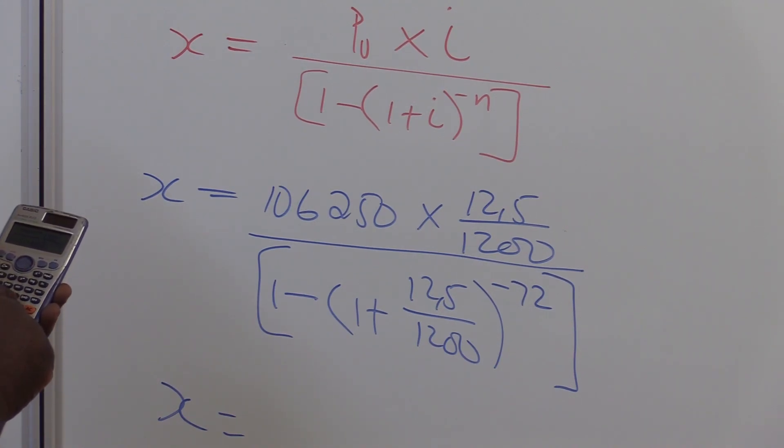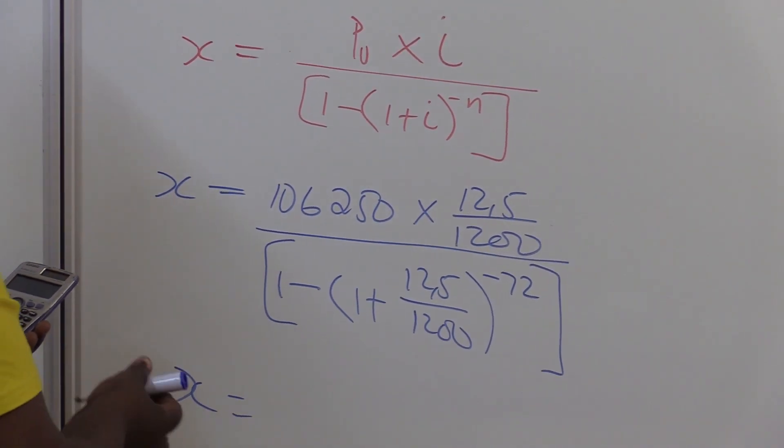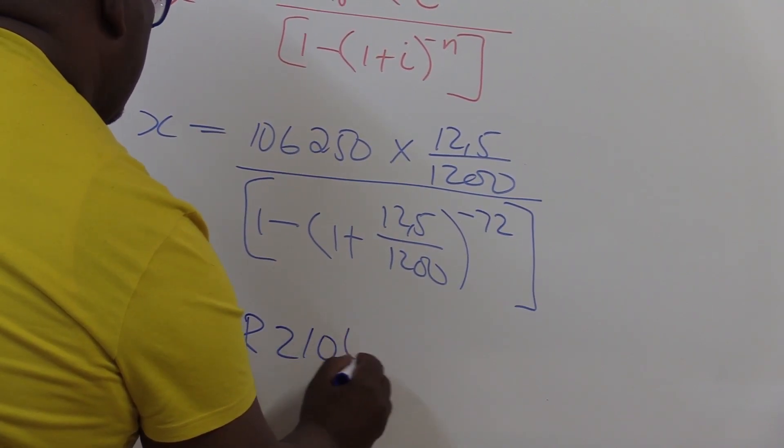Minus 72. Then, you close this bracket. Then, you plus equal sign. This is what we have.